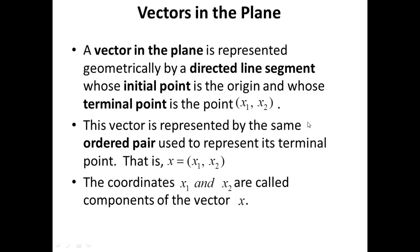We're going to start this lecture by looking at vectors in the plane. When we talk about the plane here, we are referring to the XY plane, where the only coordinates are the X coordinate and the Y coordinate. A vector in the XY plane is represented geometrically by a directed line segment whose initial point is the origin, that is the point (0,0), and whose terminal point is the point X1, X2. This vector is represented by the same ordered pair used to represent its terminal point.